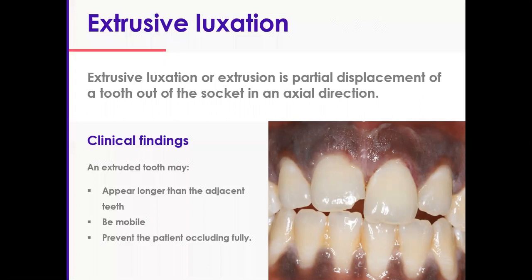Clinically, the tooth appears longer than the adjacent teeth. It will be mobile and the bite will be propped open, preventing the patient from fully occluding. As you can see in this close-up photograph, the tooth is elongated, there is some cleavage, and there is also a fracture injury. This could be a combination — this could be concussion as well.